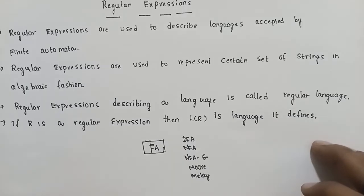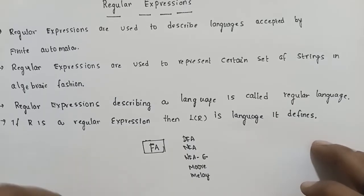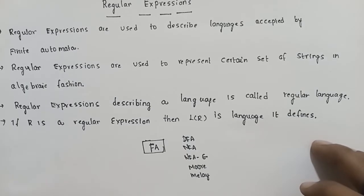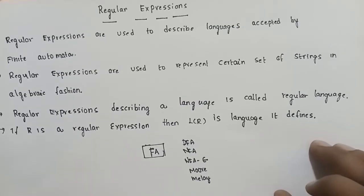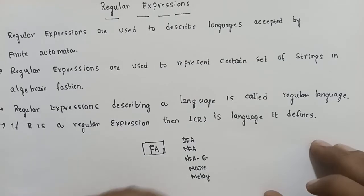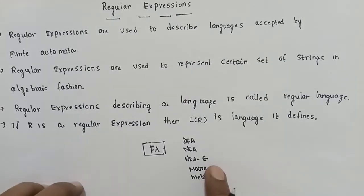Finite automata is a language. Finite automata is an abstract machine. I am going to talk about a particular pattern or string — about a machine, a finite automata, and the different finite automata units.